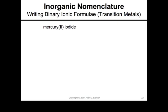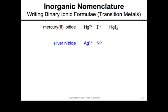Let's write some names out. Mercury(II) iodide: mercury(II) is Hg 2+ — remember, mercury is Hg, not Mg (Mg is magnesium, don't mix them up). Iodide is 1− because it is in column 7A. The least common multiple of 2 and 1 is 2, so you take one mercury(II) ion and two iodide ions: HgI₂. Silver nitride: silver is 1+ (you must memorize this). Nitride is 3− because it's in column 5A. The least common multiple of 1 and 3 is 3, so the formula is Ag₃N — three silver ions and one nitride ion.